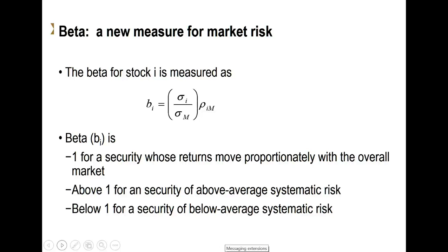So what is the measure of systematic risk? The measure of systematic risk is called beta. And beta is just going to be the standard deviation, the volatility of your company,